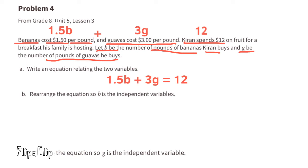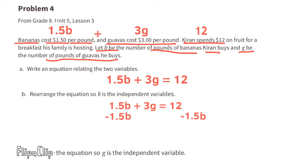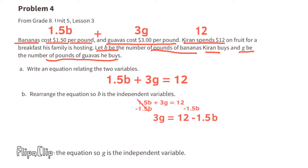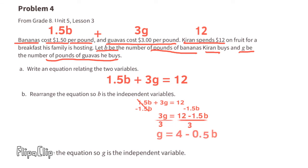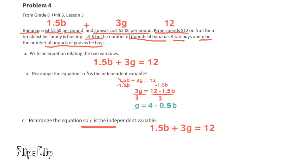B: Rearrange the equation so B is the independent variable. We need to get G by itself, so subtract 1.5B from both sides. The equation reads 3G equals 12 minus 1.5B. Divide both sides by 3, and 12 minus 1.5B divided by 3 equals 4 minus 0.5B. The equation now reads G equals 4 minus 0.5B.